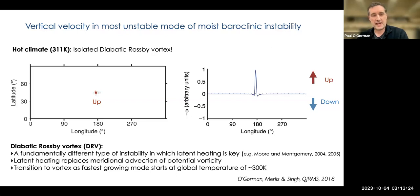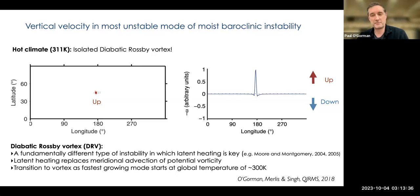The transition happens in this GCM at a global mean surface temperature of about 300 Kelvin, which is very far away from where we are now. But if you look at seasonal temperatures in the northern hemisphere, it's not so far away from where we are now. It's not easy to make a direct comparison with this more idealized GCM.